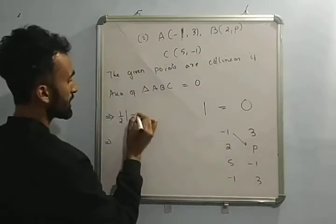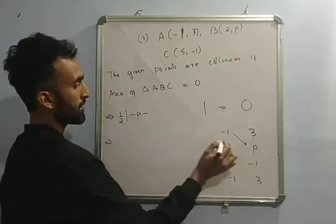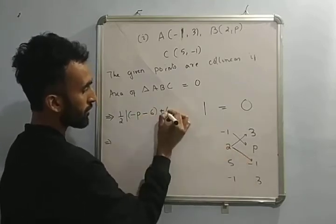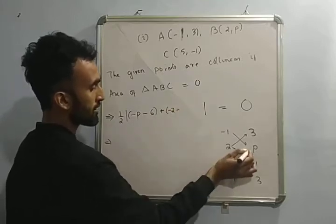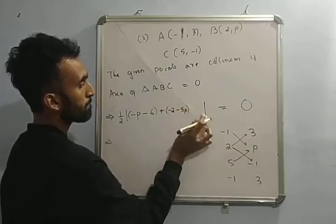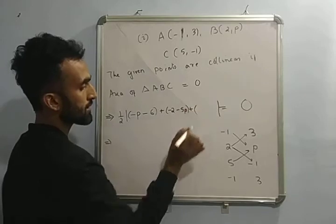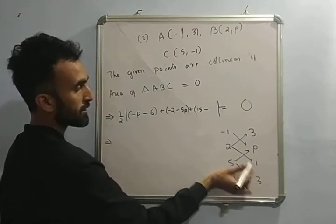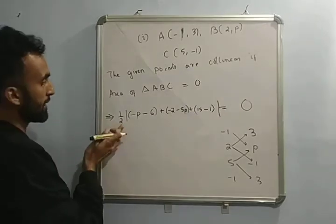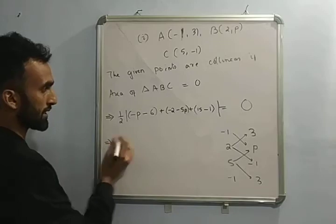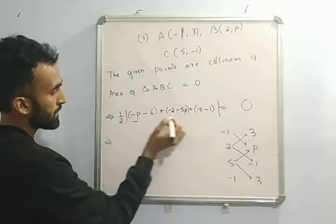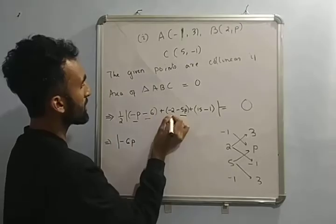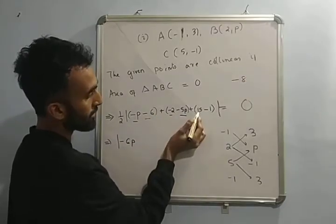Cross this: minus 1 into P is minus P. Subtract the cross: 2 threes are 6. Plus sign. Cross this: 2 into minus 1 is minus 2. Minus. Cross this: 5 into P is 5P. Plus, 5 threes are 15. Minus: minus into minus is plus, 1 times 1 is 1, so plus 1. So minus P minus 5P becomes minus 6P. Then minus 6 minus 2 is minus 8, and plus 15 minus 1 is plus 14.